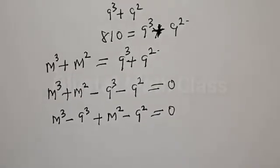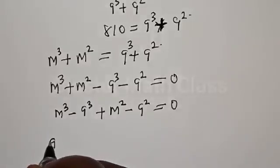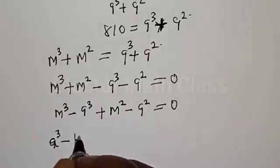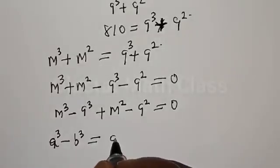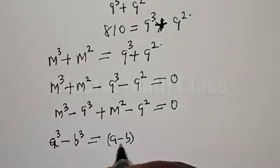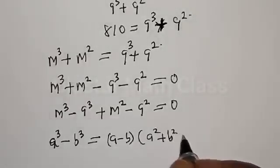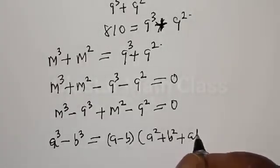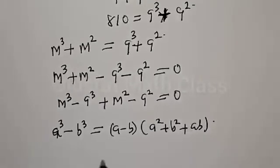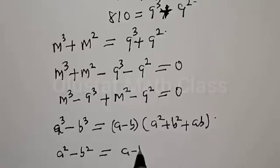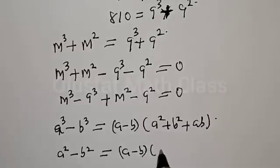Now remember, if you have A³ minus B³, that is the same thing as (A minus B) multiplied by (A² plus B² plus AB). Also, if you have A² minus B² that is equal to (A minus B) multiplied by (A plus B).